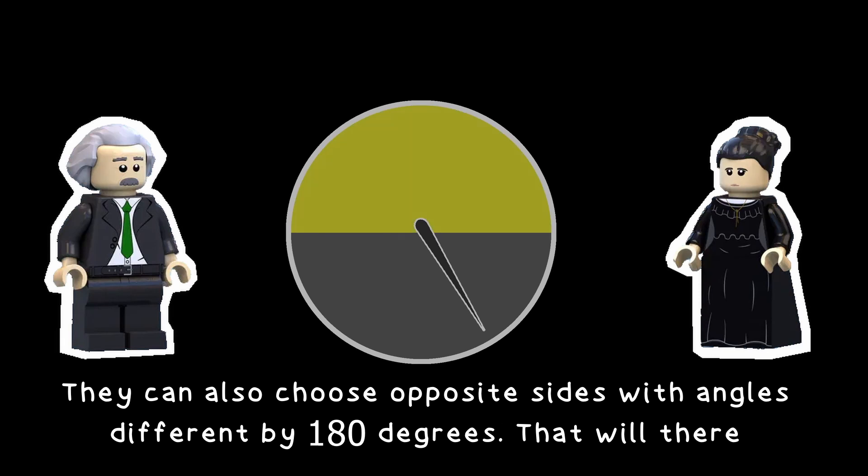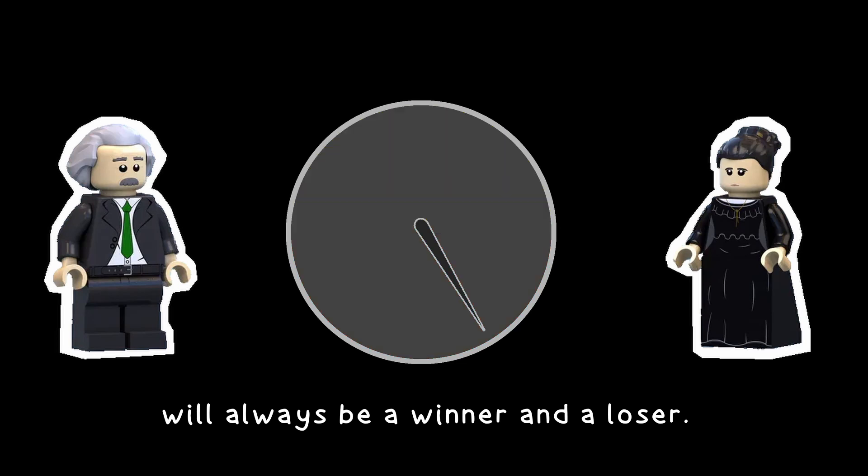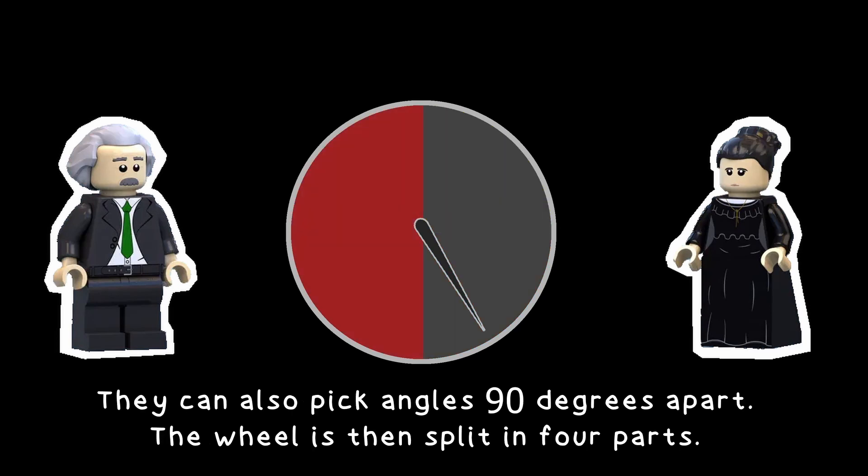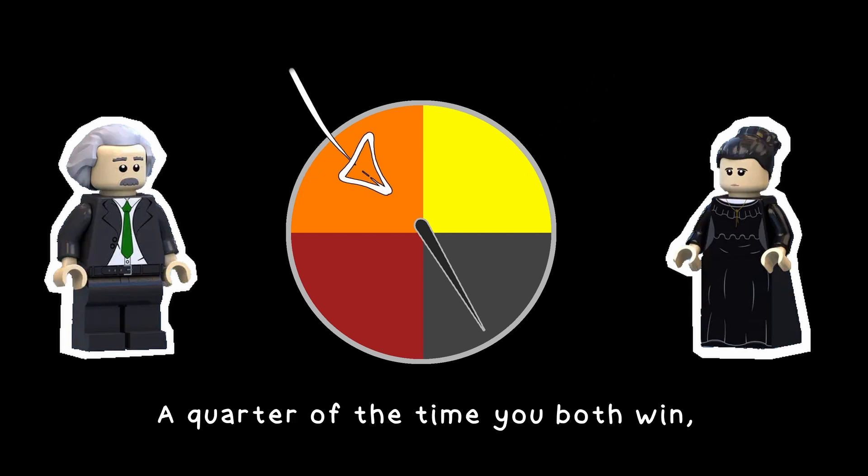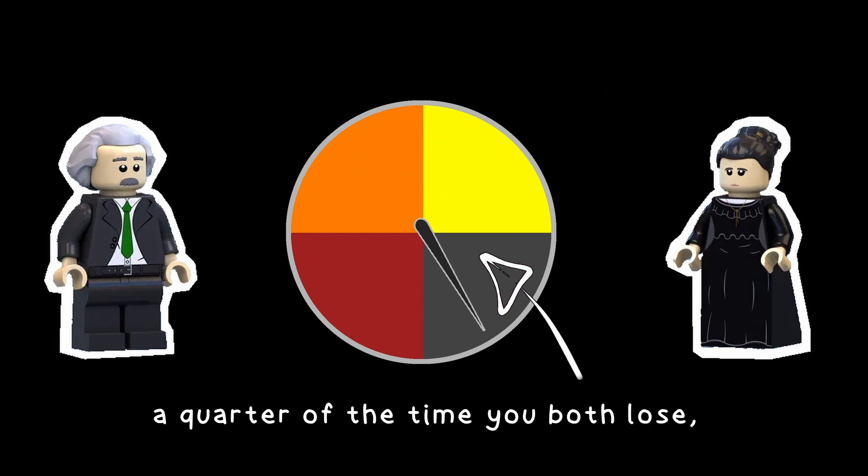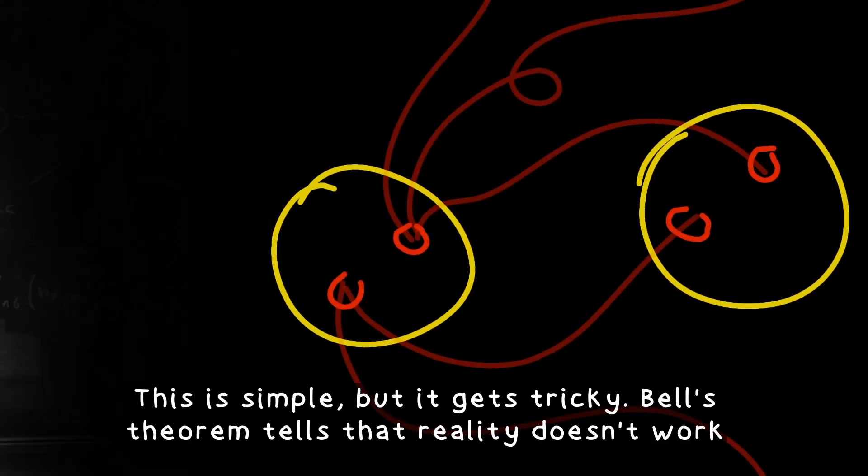They can also choose opposite sides with angles different by 180 degrees. That way, there will always be a winner and a loser. They can also pick angles 90 degrees apart. The wheel is then split into four parts, a quarter of the time you both win, a quarter of the time you both lose, and half the time there is one winner and one loser. This is simple but it gets tricky.